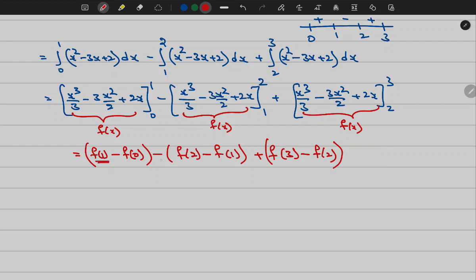Now if you observe f of 1 and f of 1, I can write 2 times f of 1 minus f of 0. And again minus f of 2, I can write minus 2 times f of 2 plus f of 3.